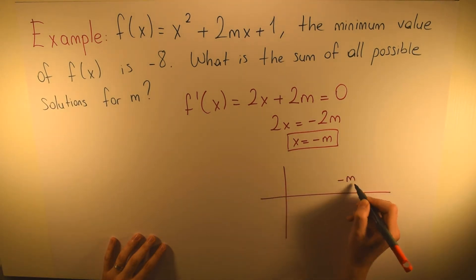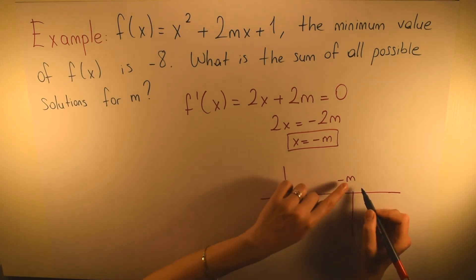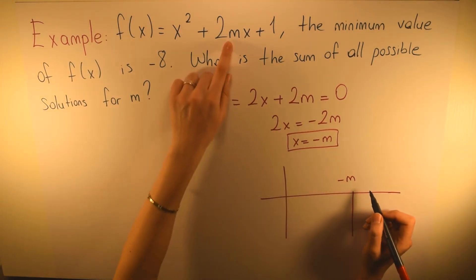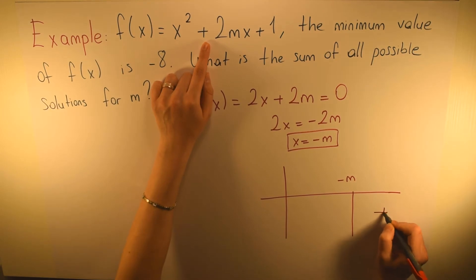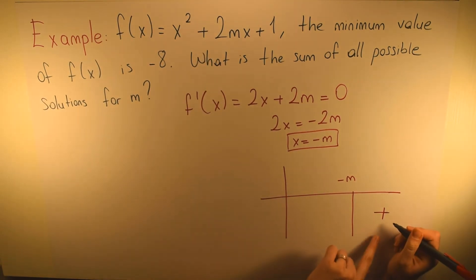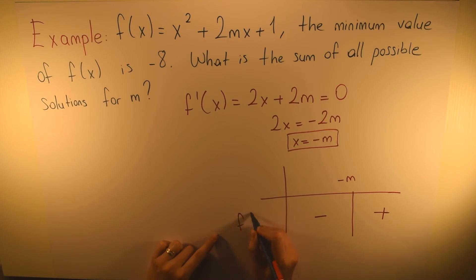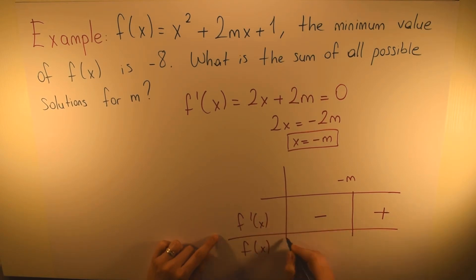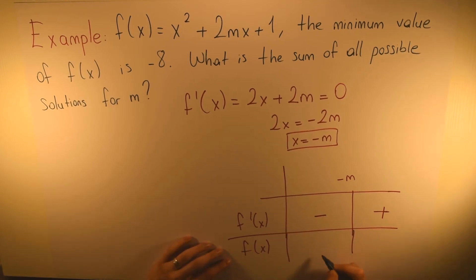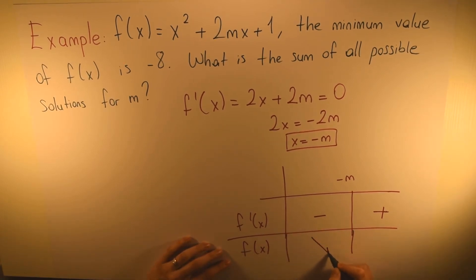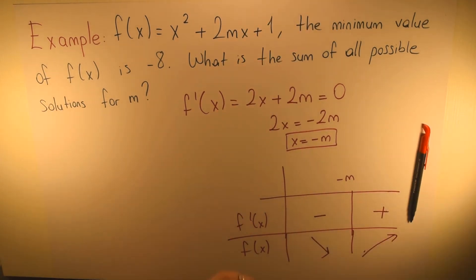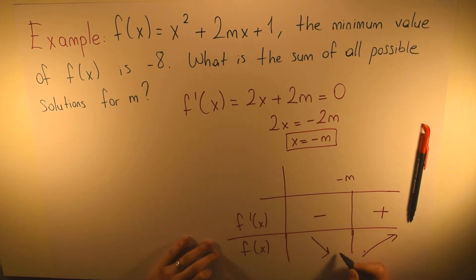The first derivative of f(x) equals 2x + 2m. Setting this equal to zero: 2x = -2m, so x = -m. This means -m is our critical point. Drawing our sign chart with -m as the critical point. Since the sign of the leading coefficient is positive, the function starts with a positive sign, then negative — meaning the function is increasing before -m and decreasing after.